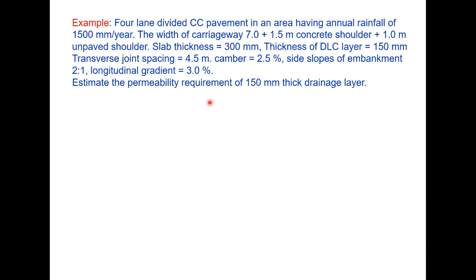We take one example here to illustrate how to determine the permeability of the drainage layer. A 4 lane divided cement concrete pavement in an area having annual rainfall of 1500 millimeter per year. The width of carriageway is 7.0 plus 1.5 meter concrete shoulder plus 1.0 meter unpaved shoulder on each side. The slab thickness 300 millimeter, DLC layer 150 millimeter, transverse joint spacing 4.5 meter, camber 2.5 percent, side slope of embankment 2 is to 1 and longitudinal gradient is 3.0 percent. Estimate the permeability requirement for 150 millimeter thick drainage layer.